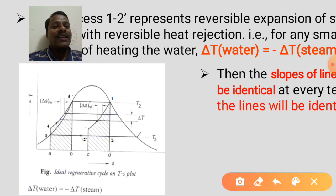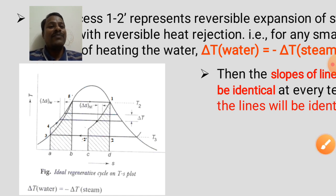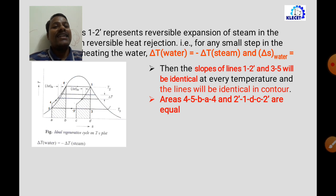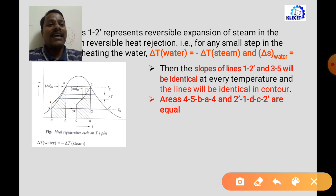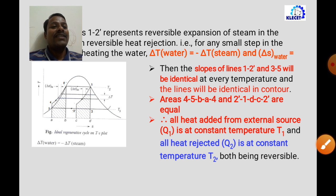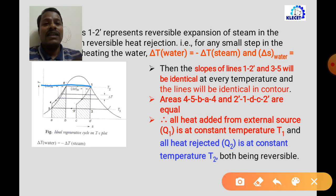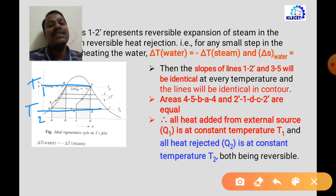On the T-S diagram, the slope of line 1 to 2' and the slope of line 3 to 5 are the same. The hatched areas — area 4-5-b-a and area 2'-1-d-c — are equal. All heat added from the external source, q1, is added at boiler temperature T1, and heat rejected, q2, is rejected at condenser temperature T2. Both are reversible processes.